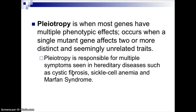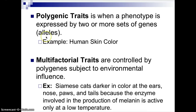Pleiotropy is when most genes have multiple phenotypic effects. It occurs when a single mutant gene affects two or more distinct and seemingly unrelated traits. Pleiotropy is responsible for multiple symptoms seen in hereditary diseases such as cystic fibrosis, sickle cell anemia, and Marfan syndrome. Polygenic traits are due to pleiotropic responses. Polygenic — poly meaning many, genic meaning genes — is when a phenotype is expressed by two or more sets of genes or alleles. Human skin color, for example, is a polygenic trait where more than one gene plays a role in skin pigmentation.